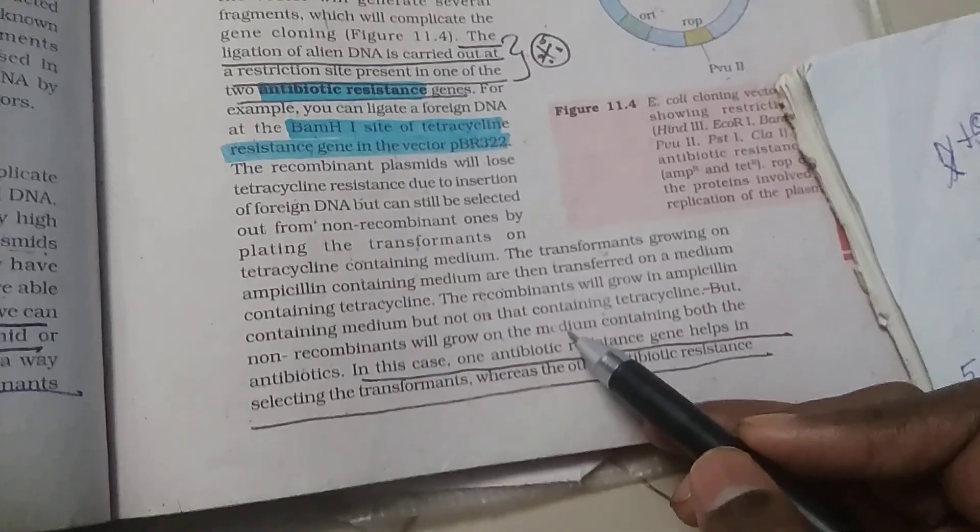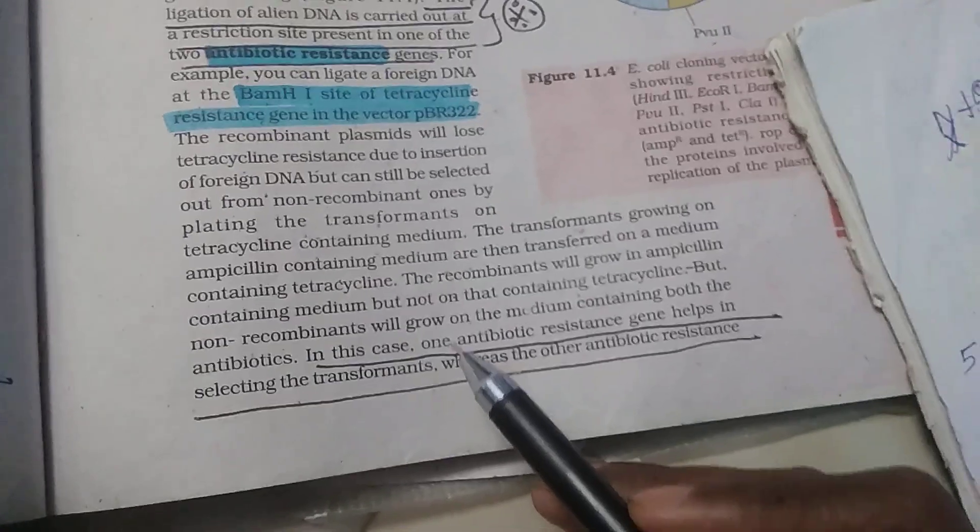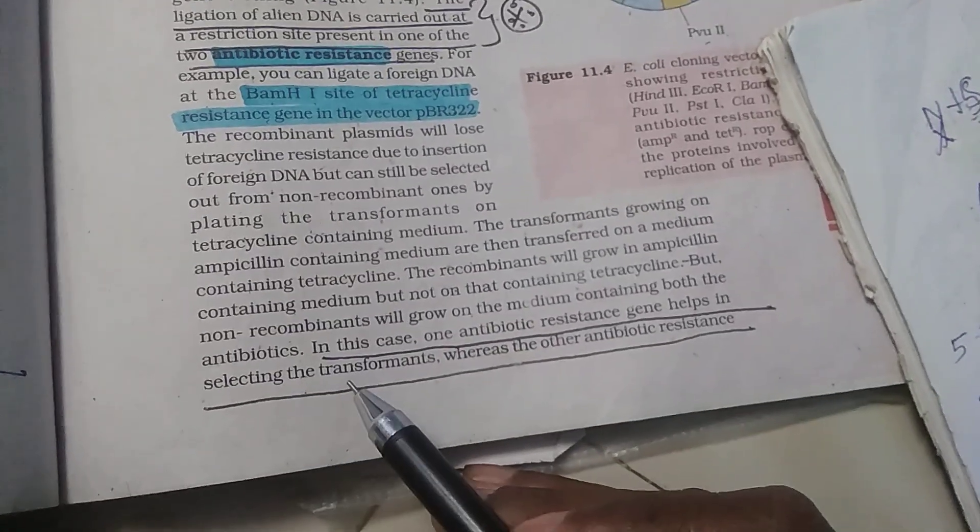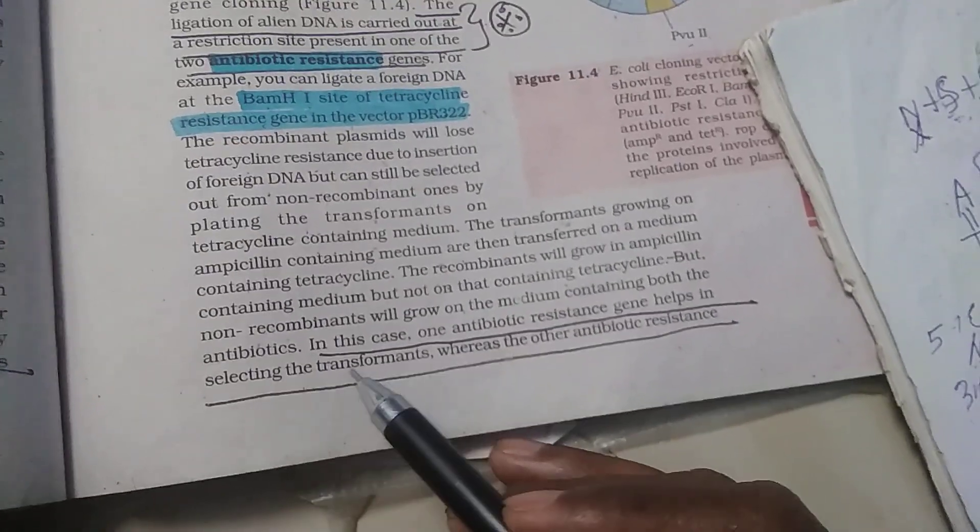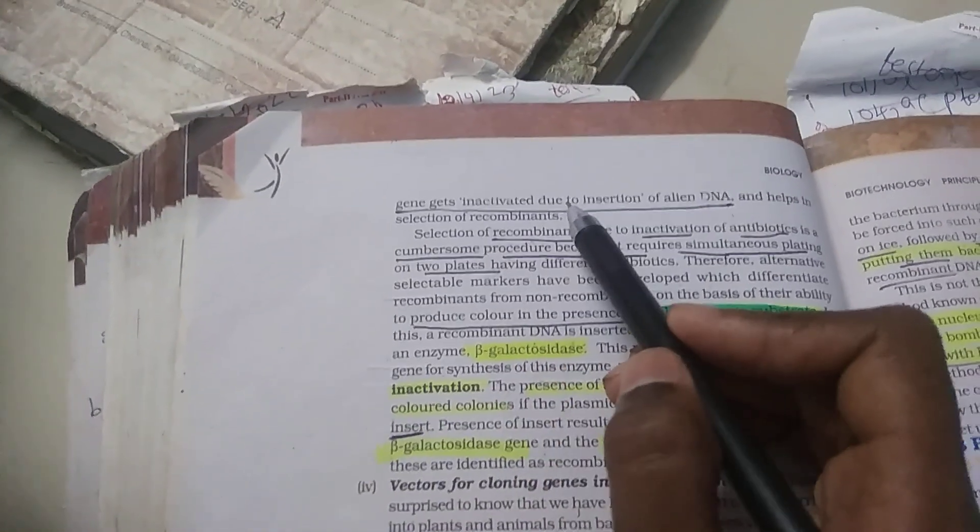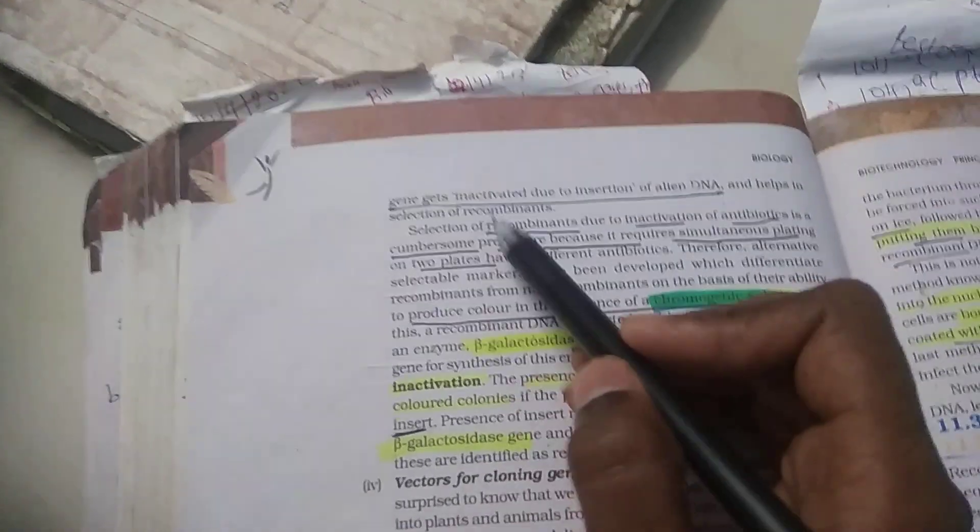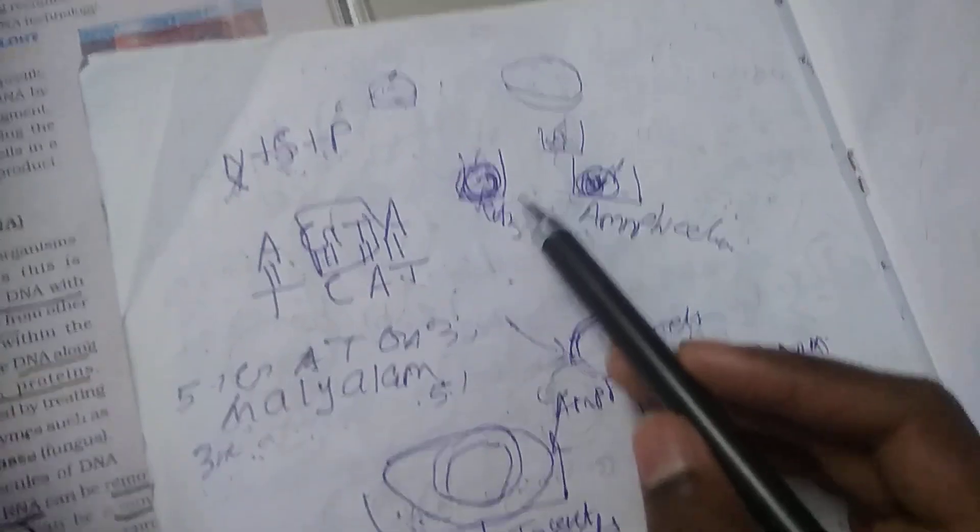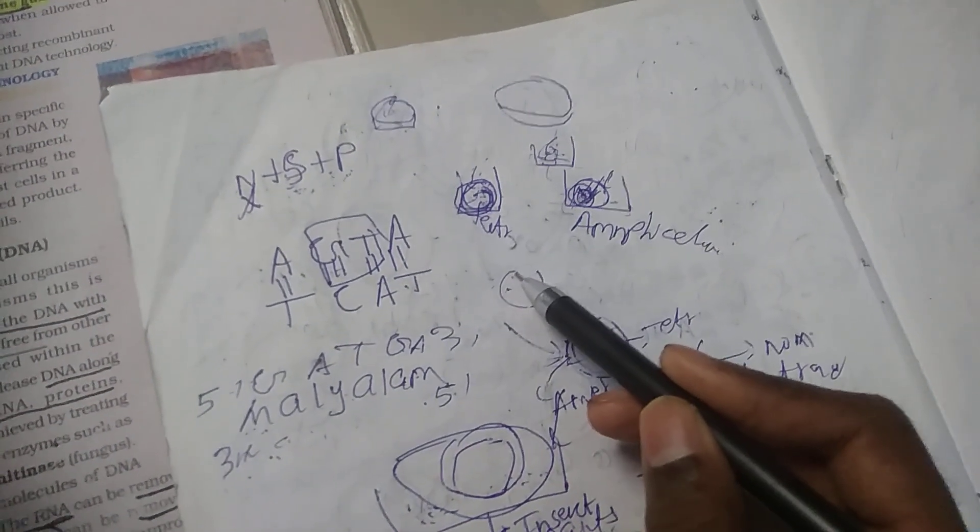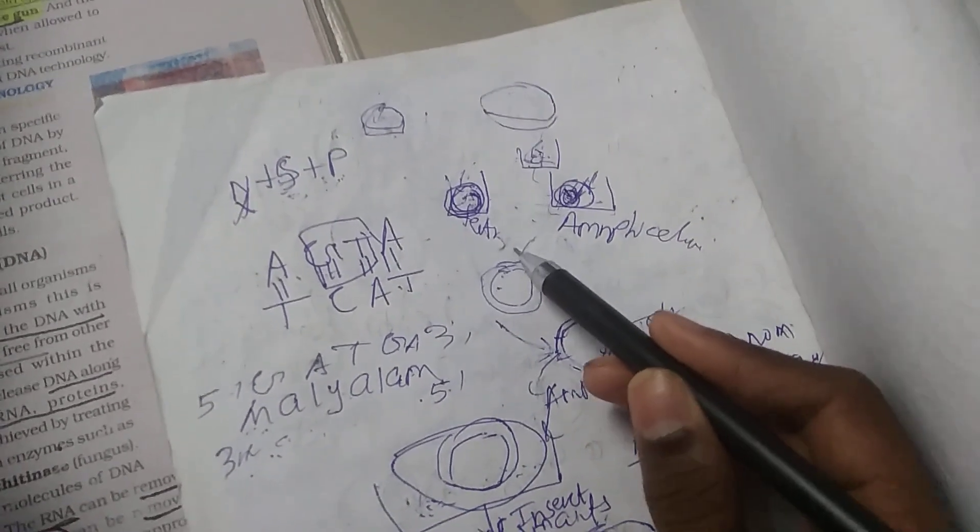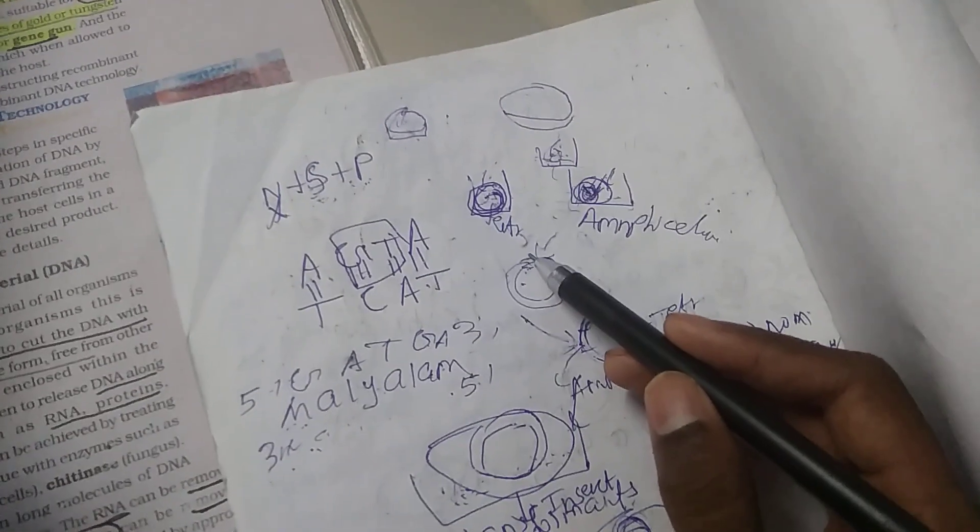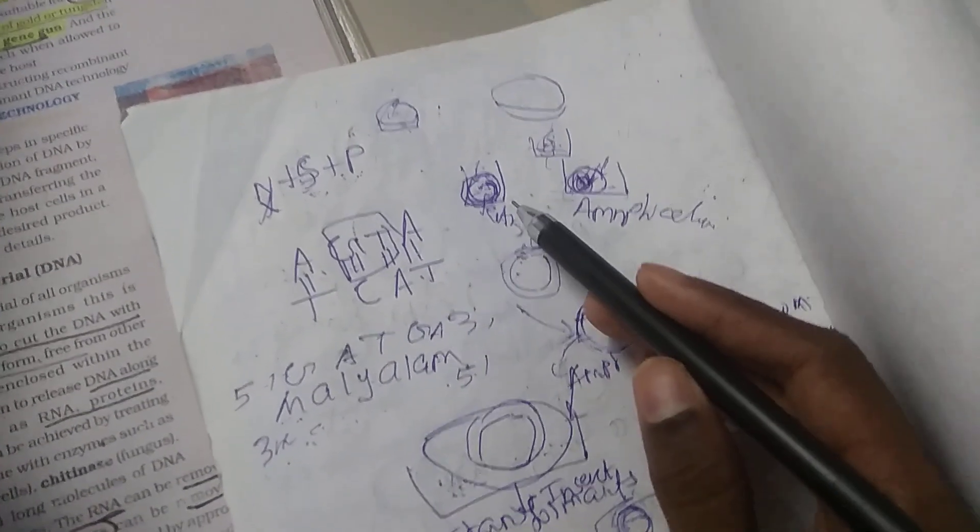Non-recombinants can grow in medium containing both antibiotics. One antibiotic resistant gene helps in selecting transformants, whereas the other antibiotic resistant gene gets inactivated due to insertion of DNA. This is the recombinant. You can use DNA insertion to identify.